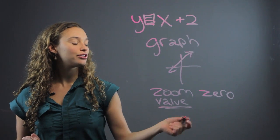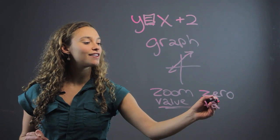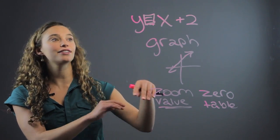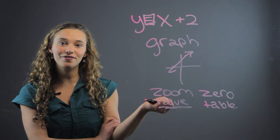You can also go to table, where you can find values. So if you enter a certain value for x, it'll spit out the value for y. So that's also really great.